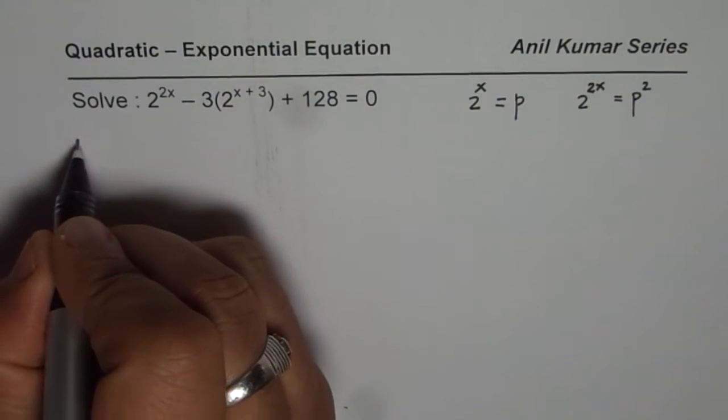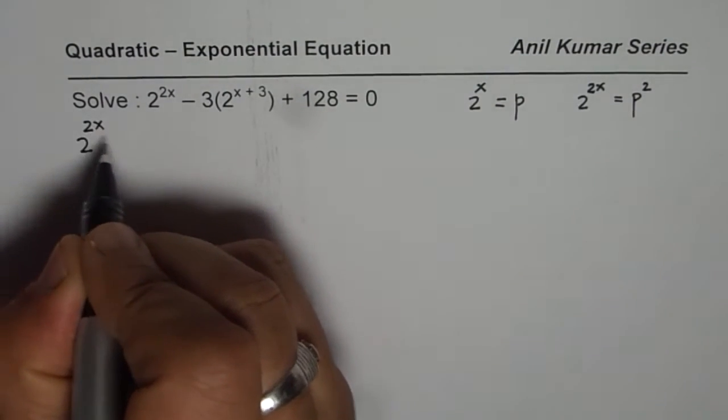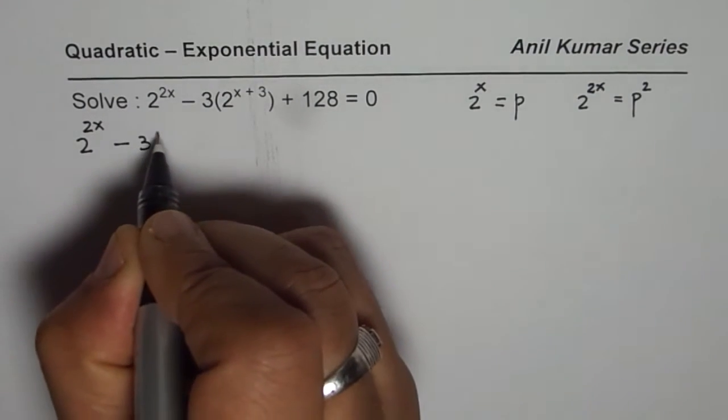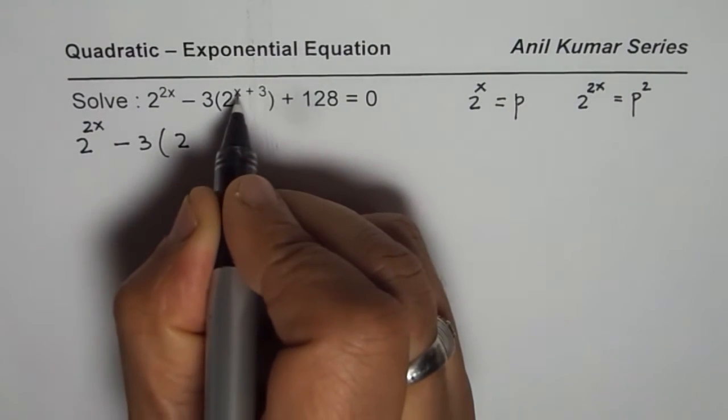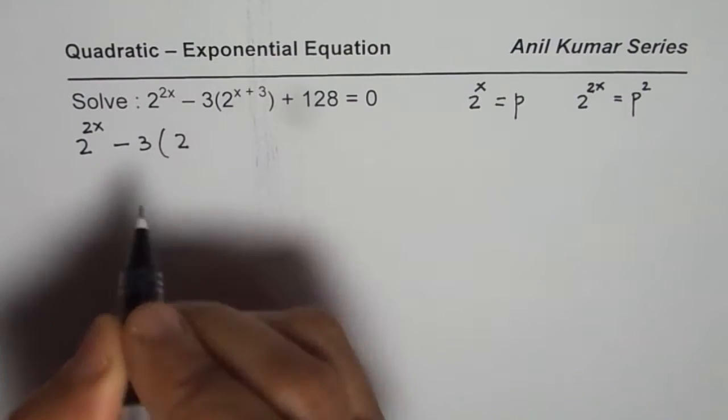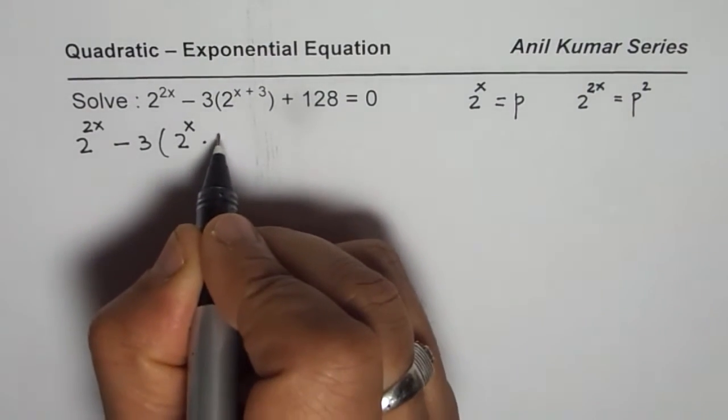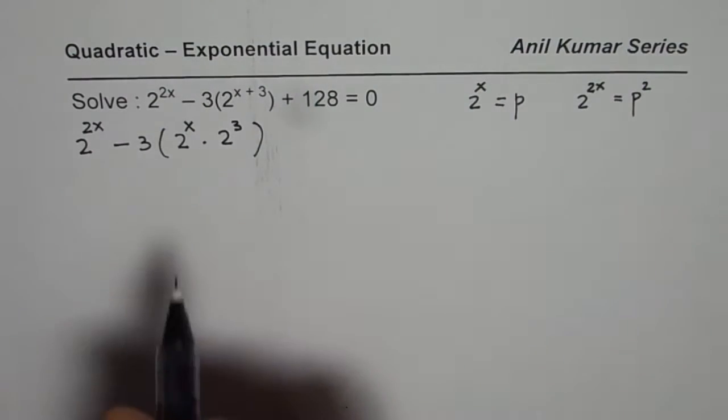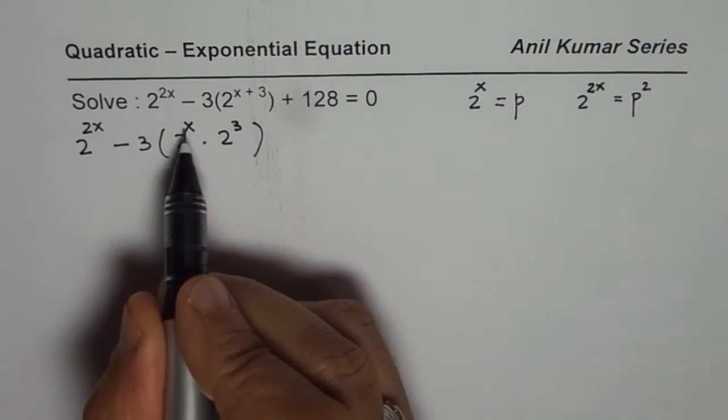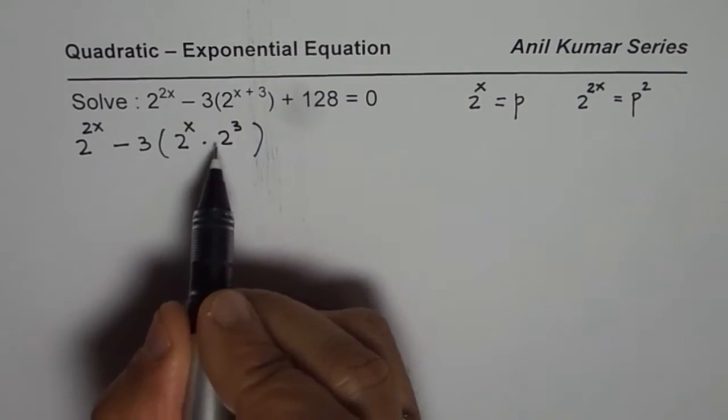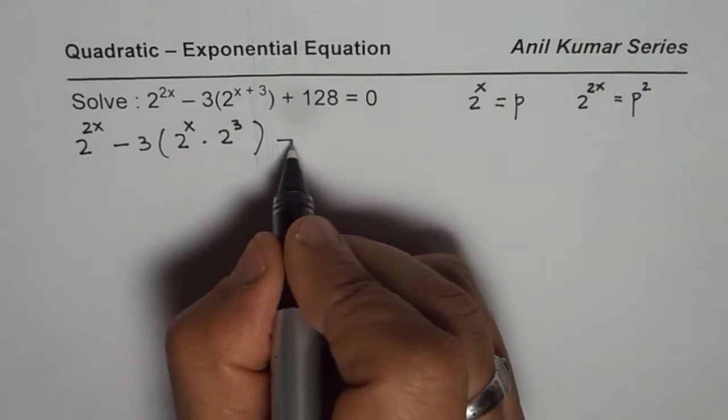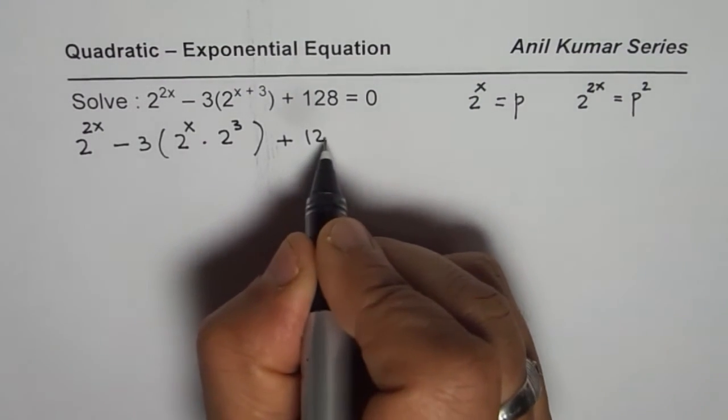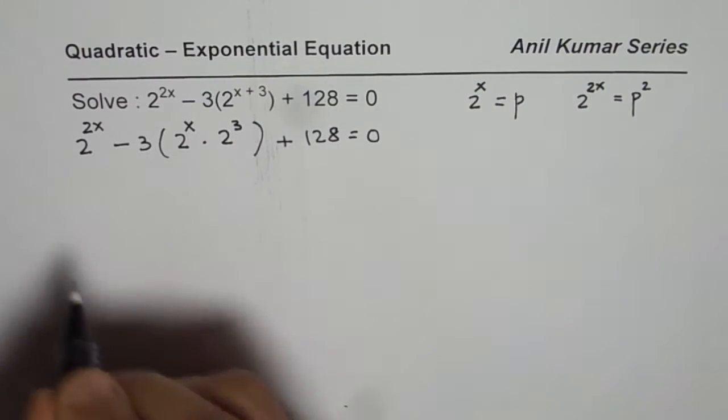So we are given the equation 2 to the power of 2x minus 3 times 2 to the power of x plus 3. It means 2 to the power of x times 2 to the power of 3. When you have same base exponents get added up. That is what it is. Now writing like this helps to solve this equation.